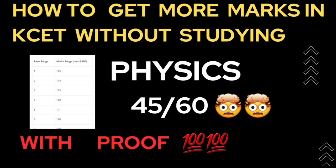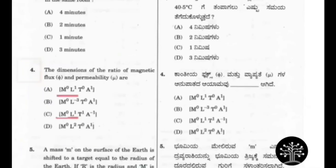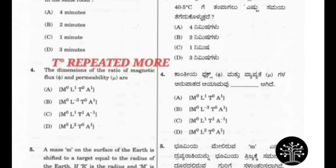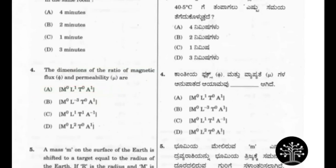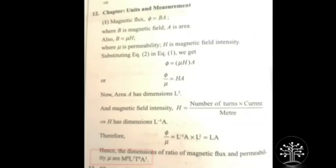This is from Units and Measurements. The first option A and C are both similar — M0 at the start and end, L1, and T0. T0 is repeated in option A and option B. Option B is supporting option A, therefore the correct answer will be option A: M0 L1 T0 A1.